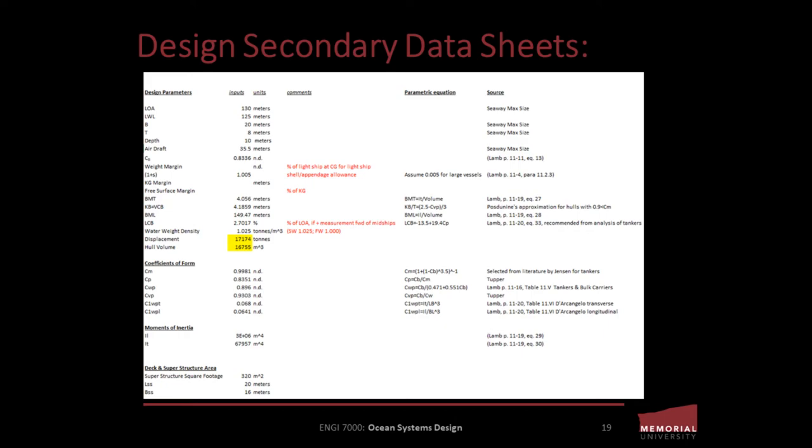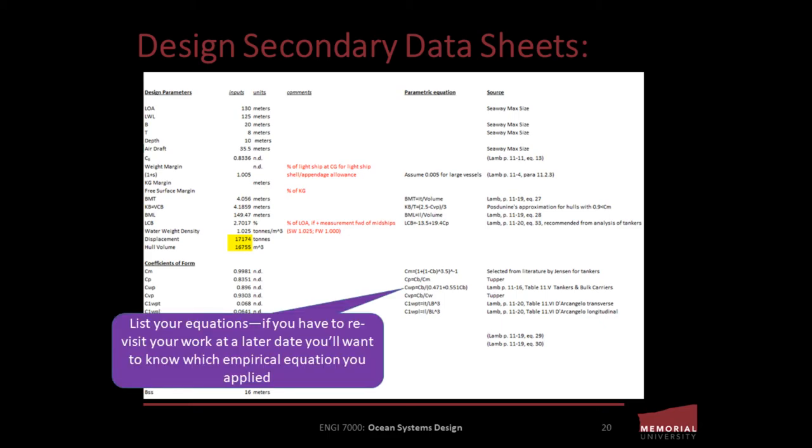Take, for instance, a range of block coefficient parametric equations that may exist for ships of different speed-length ranges. Similarly, when we're selecting equations, we need to be cognizant of the units used in the equation. Just because equations are listed sequentially in a textbook or paper, it does not mean that they're configured to operate in direct form with one another. As a result, we may need to conduct unit conversions or rewrite equations in terms of the variables we want to solve for versus the variables we've already deduced.